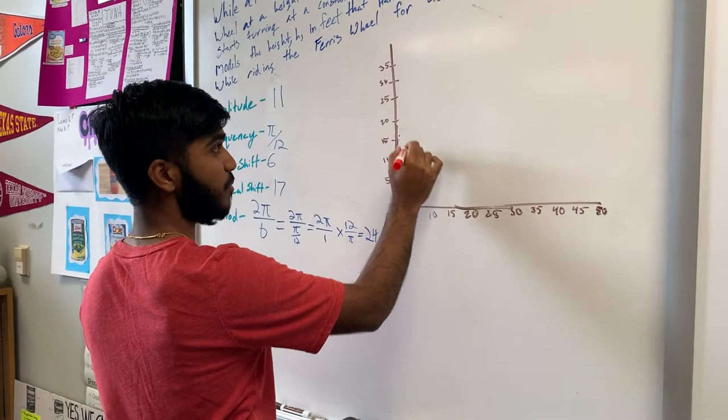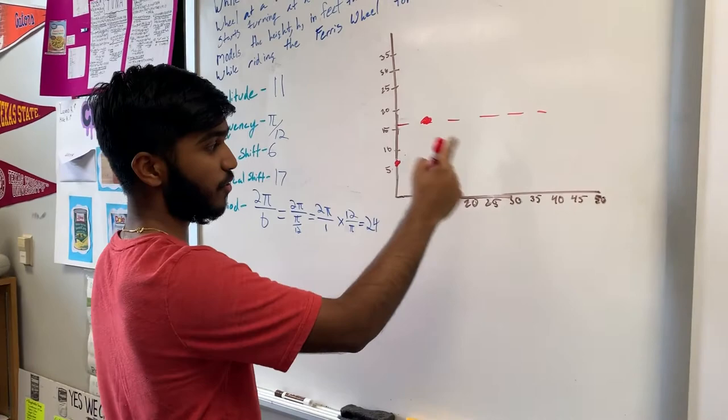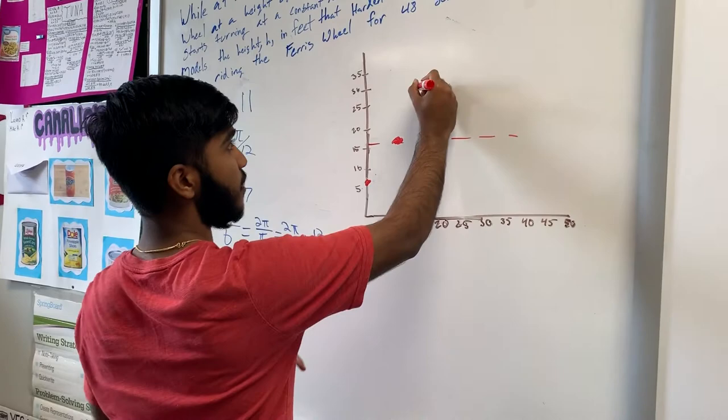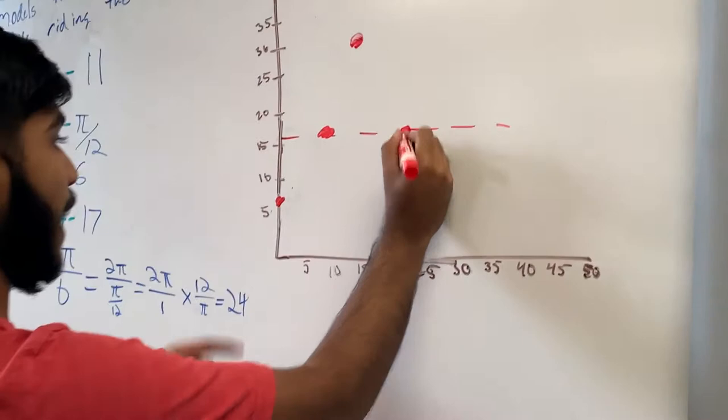Then after that, we're going to go another phase shift, which is 18, and add 11 to that, so that would be 28. Then you go back to the midline and add 24. And then add more 6, so then it's 30. And now it's 30 and 6.